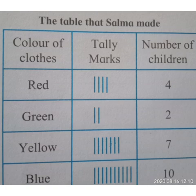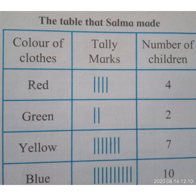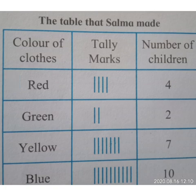For green, 2 children wore green — put 2 tally marks and write number of children: 2. For yellow, count 7 — make 1, 2, 3, 4, 5, 6, 7 tally marks and write 7. For blue — 1, 2, 3, 4, 5, 6, 7, 8, 9, 10 — total tally marks 10 and write number of children: 10. Tony said his clothes are red so he is in the first group. Sonu explained that the number of tally marks equals the number of children — that's why they are called tally marks. The vertical lines in the column are called tally marks.